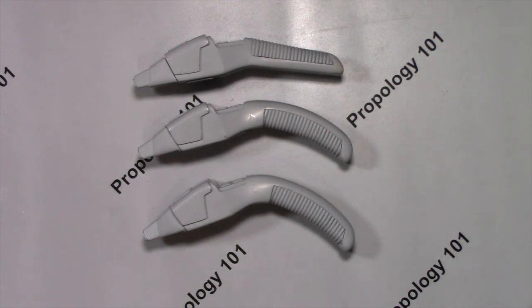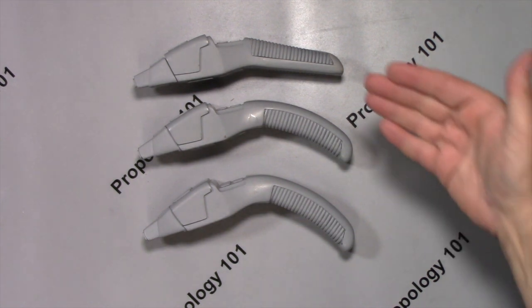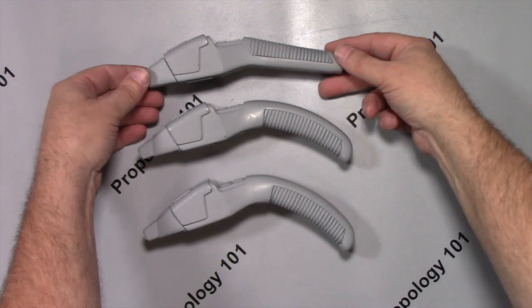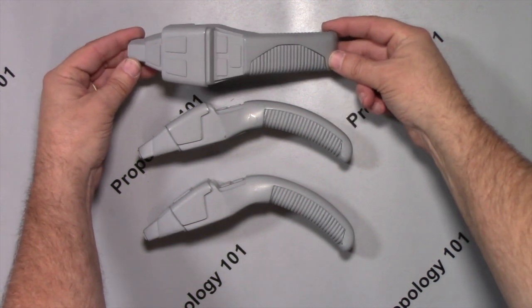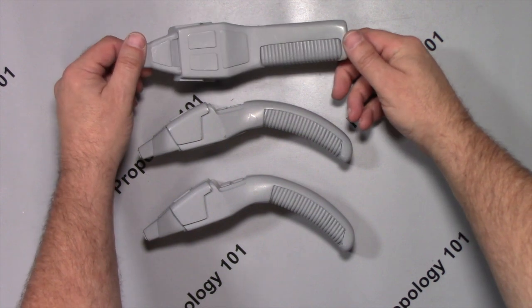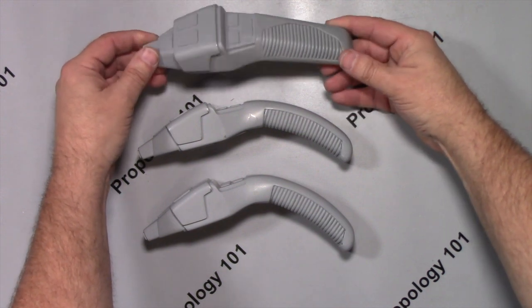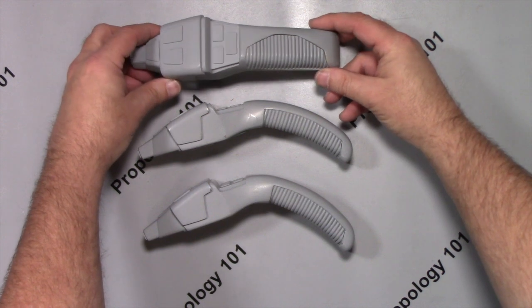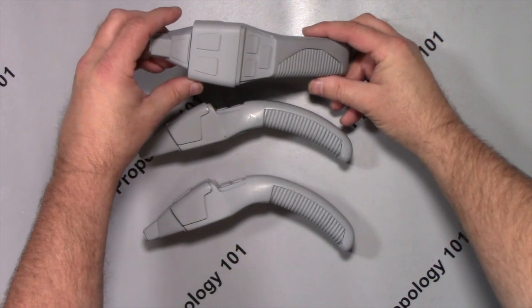These are all three of the prototypes that were sent to Rick Berman for his approval. Now, what you see here is basically what looks to be a cut down cobra head phaser. As you can see, it has all the same details and everything else. It's just everything is definitely smaller.